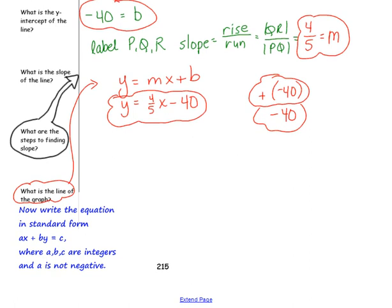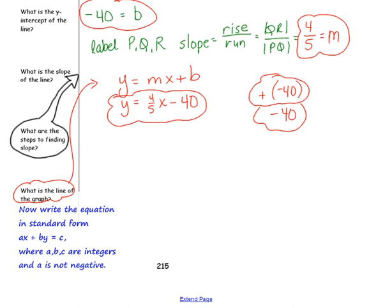Now, write the equation in standard form: ax plus by equals c, where a, b, and c are integers, and a is not negative. I'm going to rewrite the equation: y equals 4 fifths x minus 40. We will need to move 4 fifths x to the left side of the equation. Also, a, b, and c need to be integers — right now the coefficient of x is a fraction, not an integer. So, we will need to change that to an integer. And then we need to make sure that a is not negative in our answer.